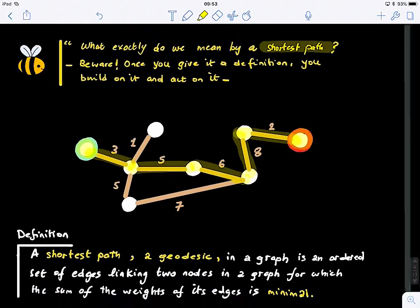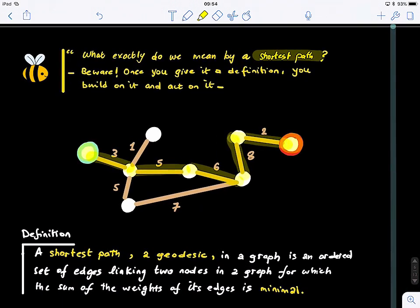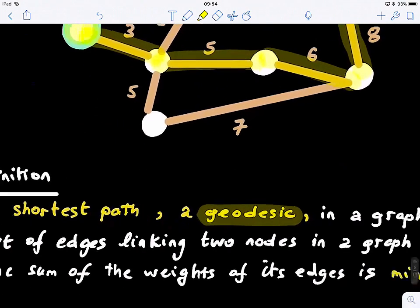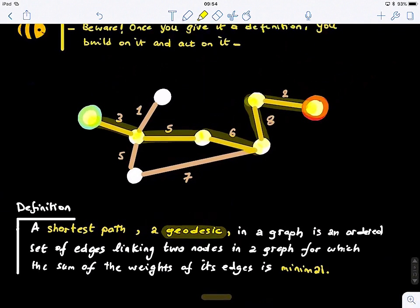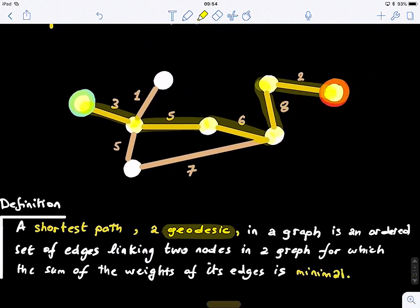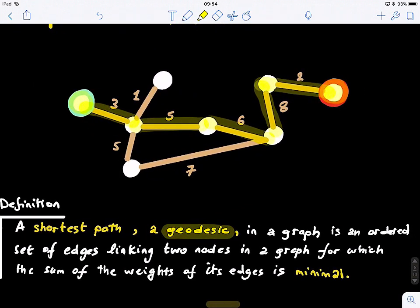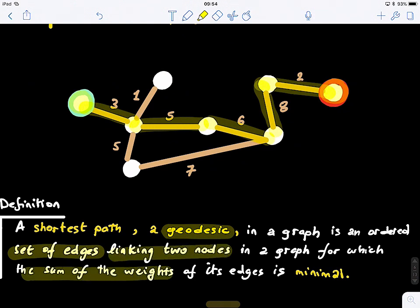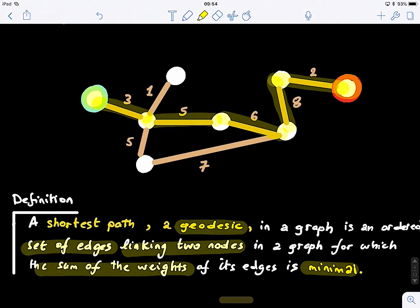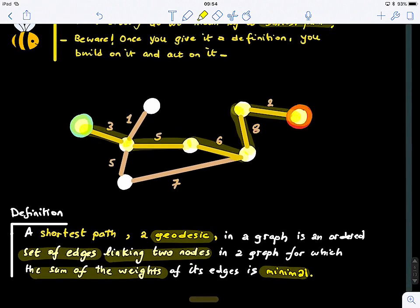The definition of a shortest path is also called a geodesic. When you see the word geodesic, it means the shortest path. A geodesic or shortest path in a graph is an ordered set of edges linking two nodes in a graph for which the sum of the weights of its edges is minimal. This is the way we are defining the shortest path in this course.